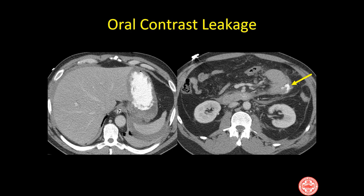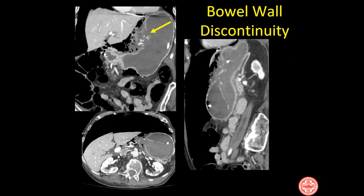Here's one example from when we used to give oral contrast — we can see extraluminal contrast arising from this injured loop of small bowel. But notice it is not the only sign: there is blood in the mesentery, stranding in the mesentery, and bowel wall thickening. So even without oral contrast, we should have been able to make this diagnosis.